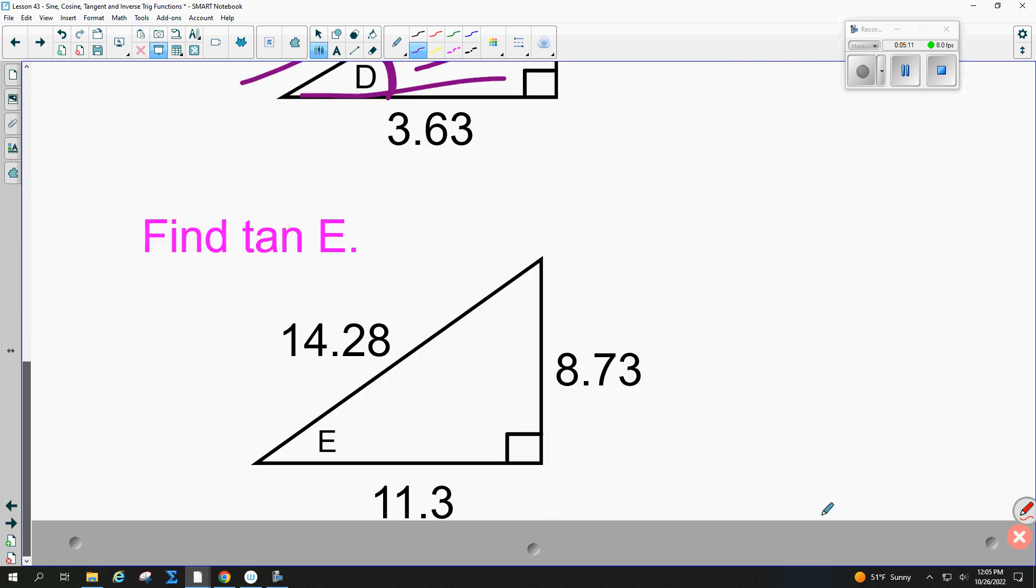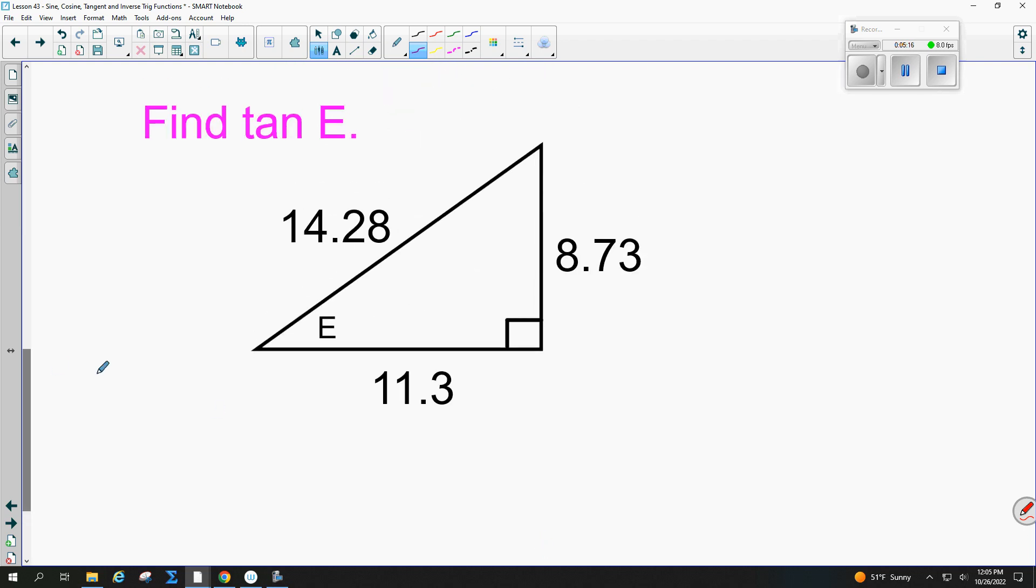And let's do tangent. So let's find the tangent of E. TOA is the tangent part. So tangent of angle E is always equal to opposite over adjacent. Which side's opposite of E? 8.73 divided by which side's adjacent? 11.3.